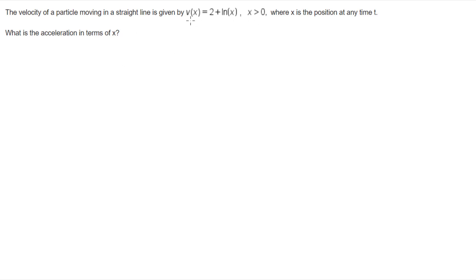If we look at our equation, we've got velocity in terms of position where position is a function of time: v(x) = 2 + ln(x), where x > 0, and we want the acceleration in terms of that x. So our aim is to get a function of acceleration in terms of position.